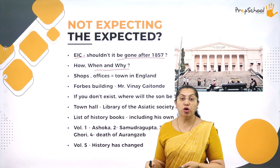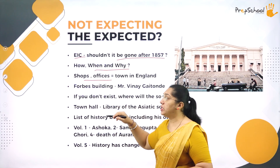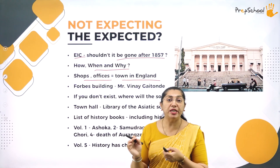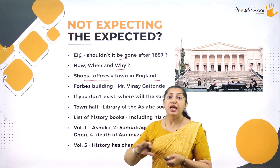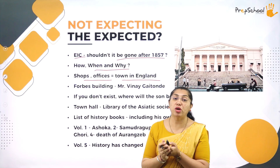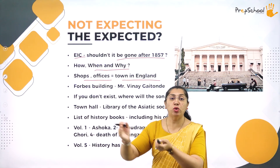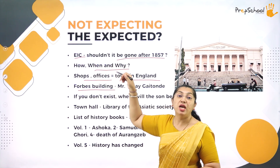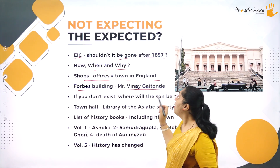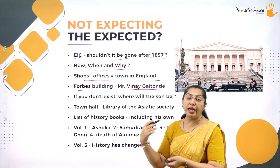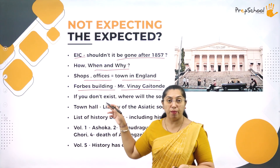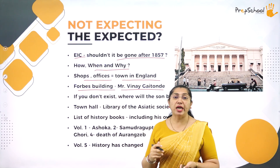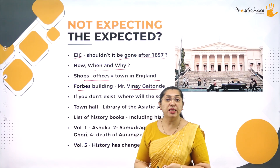He could see shops and offices that typically represented a city of England — he was just comparing. He then goes to the Forbes building to find out why the British are still there. He asks for the name 'Vinay Gaitod,' but they check the books and find no record by that name. Vinay Gaitod is the parallel son of Gangadhar Pant — and if Gangadhar Pant himself doesn't exist in that world, where would his son be?